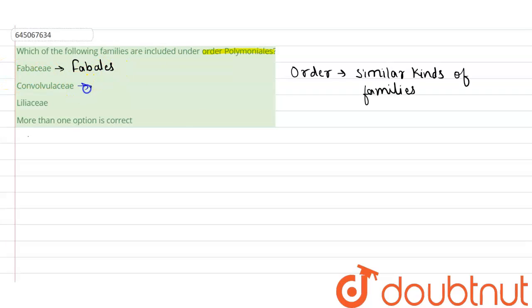Now, Convolvulaceae is indeed considered under the order Polymoniales, so this is the correct option. Option C, Liliaceae, is considered under the order Liliales, so it is also not correct. This is incorrect.